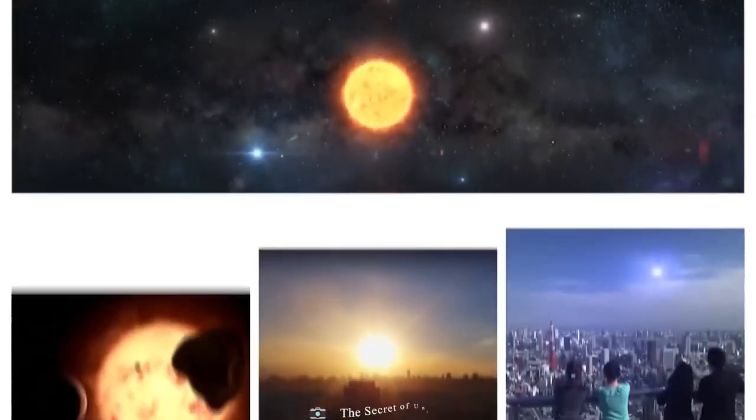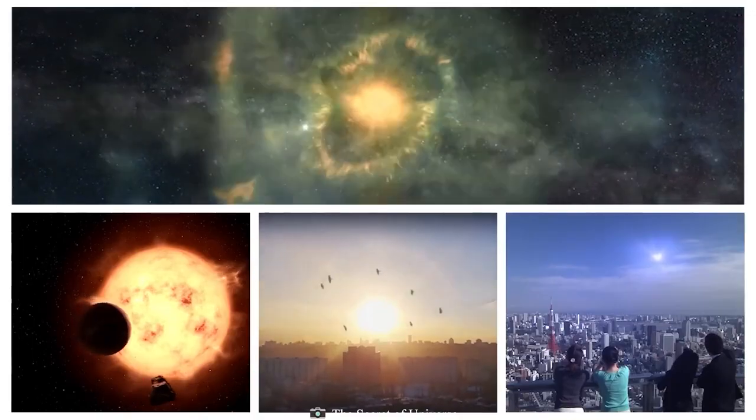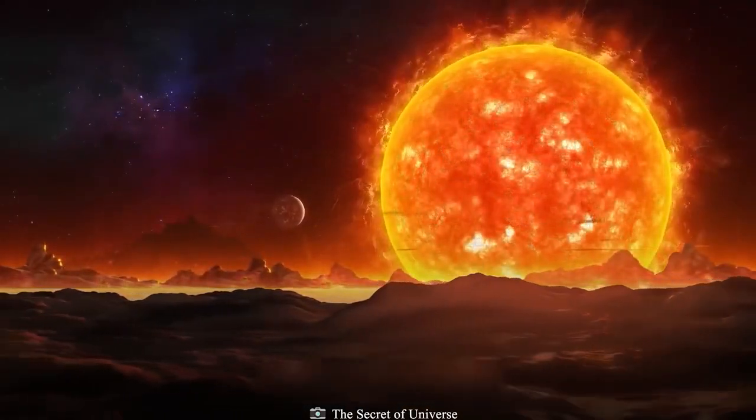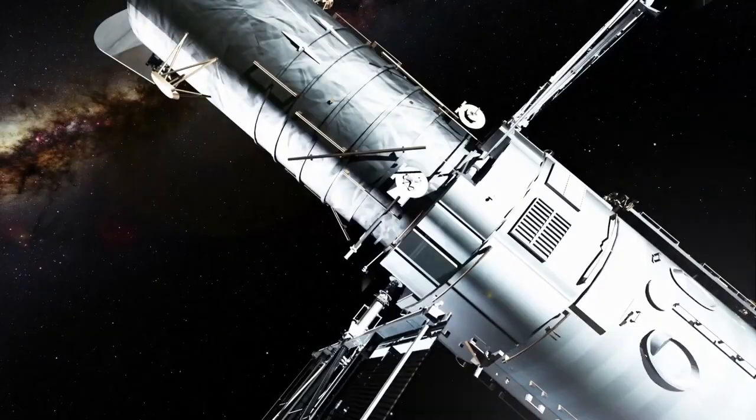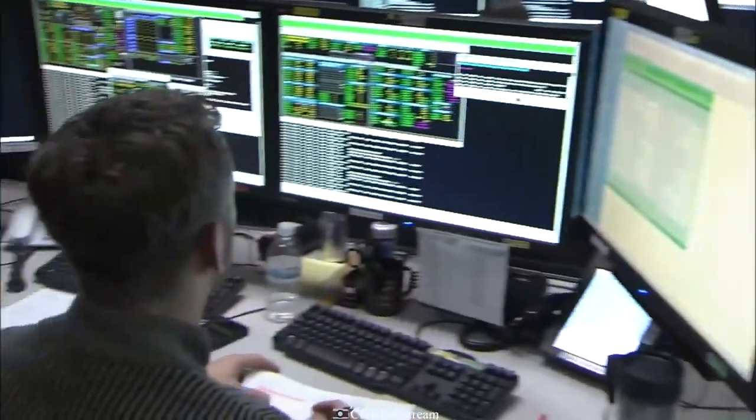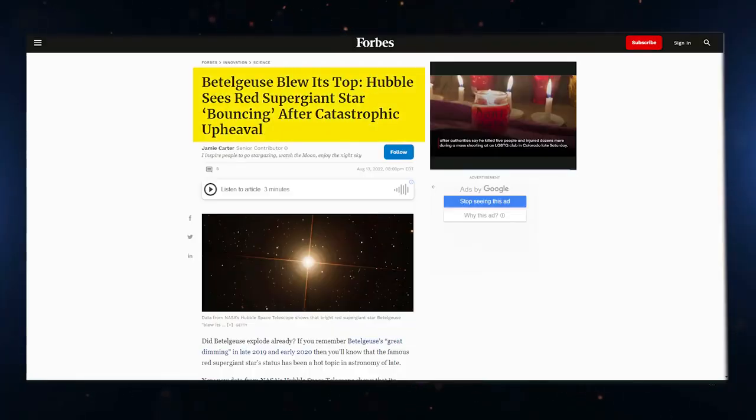In the end, the star will blow up as a supernova. When that happens, it will briefly be able to be seen from Earth during the day. But there are a lot of fireworks going off now before the final explosion. Using Hubble and other telescopes, astronomers have figured out that a huge piece of the star's visible surface blew off in 2019. No star has ever looked like this before.